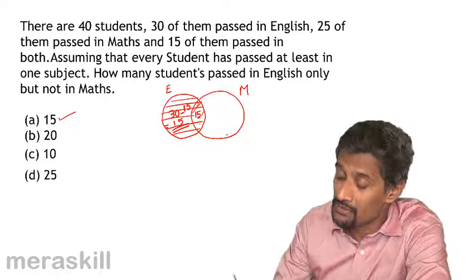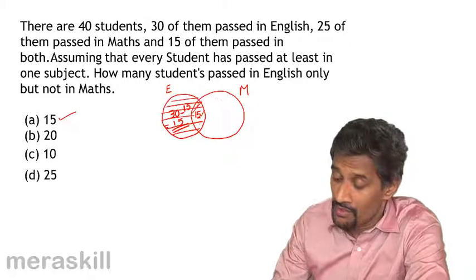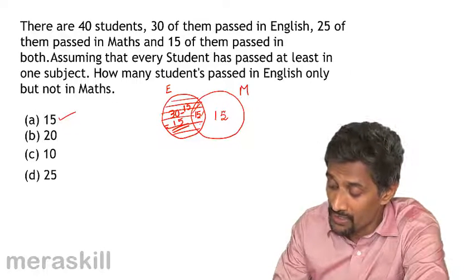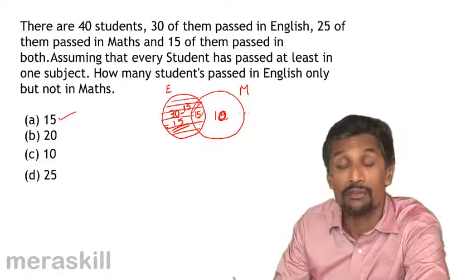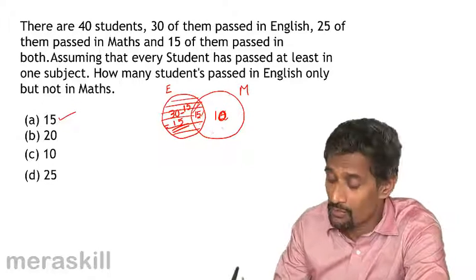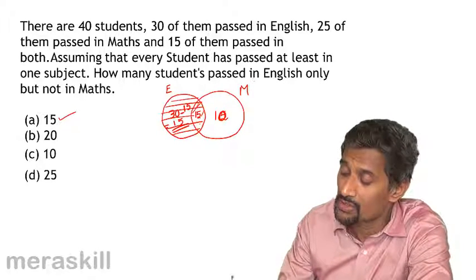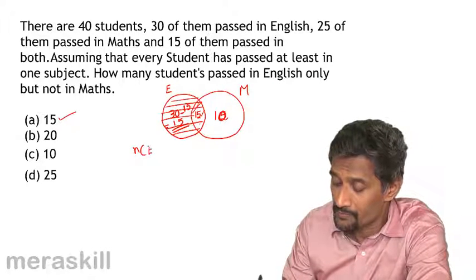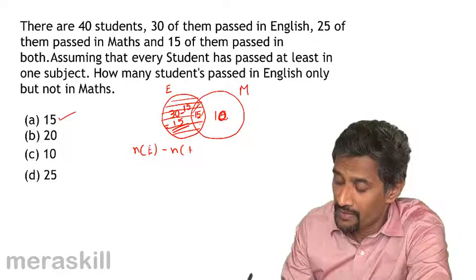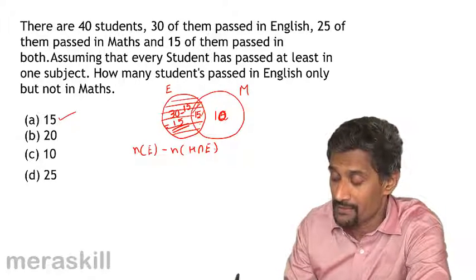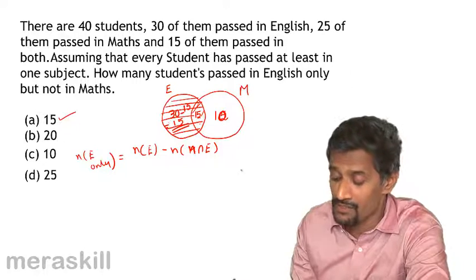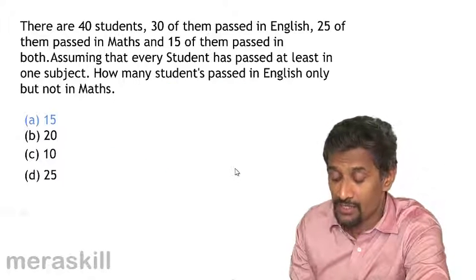Suppose it's asked how many passed in maths alone — that would be 25 minus 15, which is 10. Ten will pass in maths alone. Anyway, the question asks how many students passed in English only but not in maths. That is the number who passed in English minus the number who passed in both English and maths, which gives 30 minus 15, that is 15.